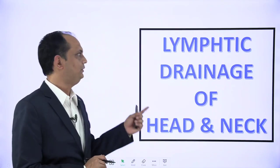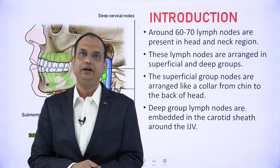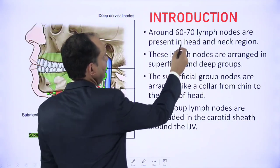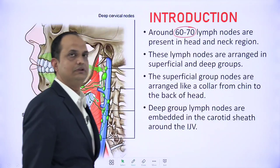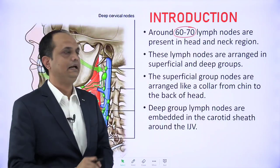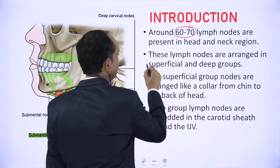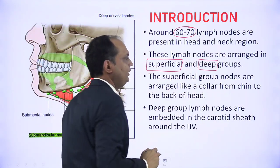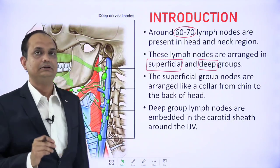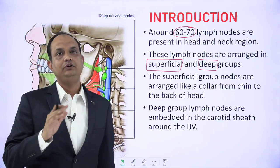Today we'll discuss the lymphatic drainage of head and neck. In this region you will find around 60 to 70 lymph nodes. The first important point to understand is that the lymphatic drainage of head and neck occurs in two sets of lymph nodes: one is superficial and another is deep.